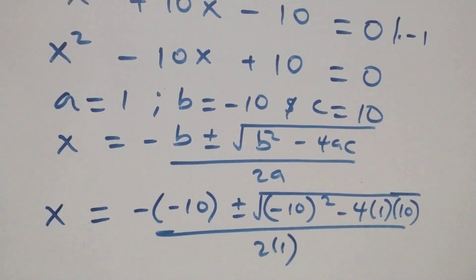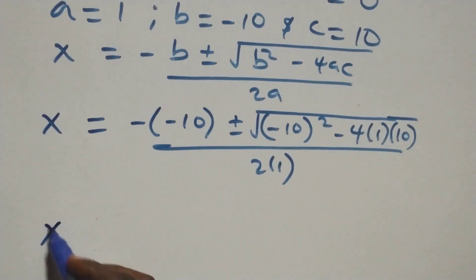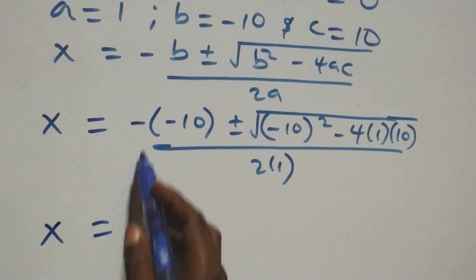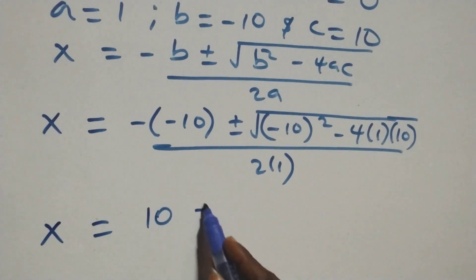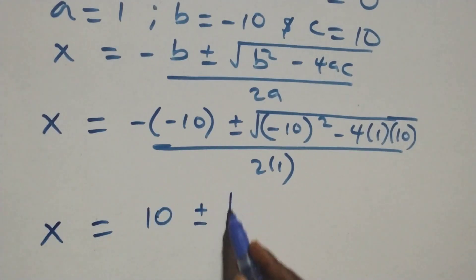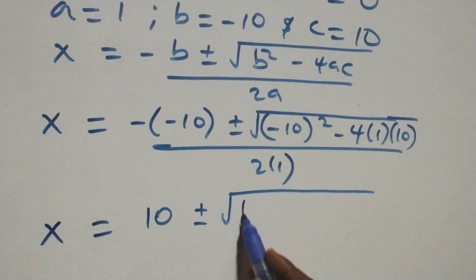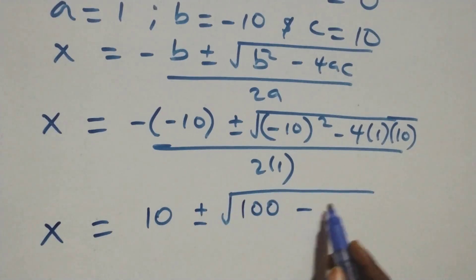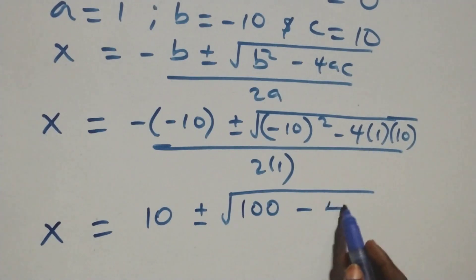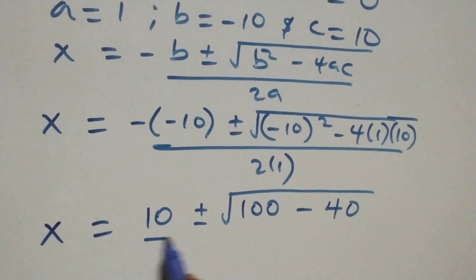Substituting, we get x equals to minus (minus ten) plus or minus square root of (minus ten) squared minus four times one times ten, over two times one. That gives x equals to ten plus or minus square root of one hundred minus forty, over two.